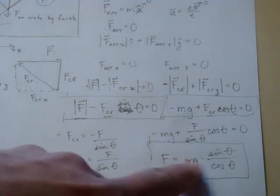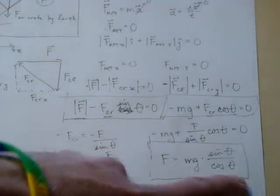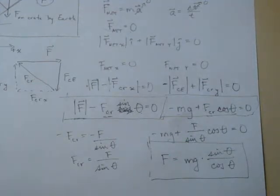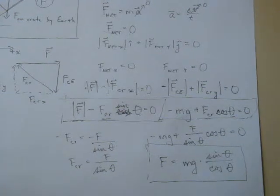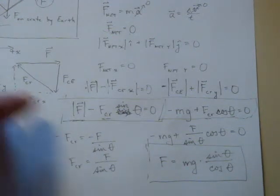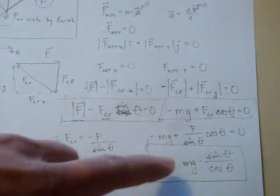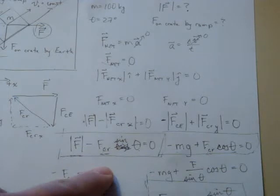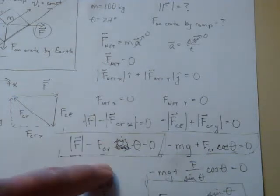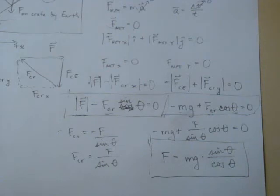We can do the same thing: we know mass, gravity, and theta, so we just plug in our numbers — I won't do that step since it's just arithmetic at that point. Similarly, once we have that information, we can go back to either of our two equations and solve for the force on the crate by the ramp. I hope that was helpful.